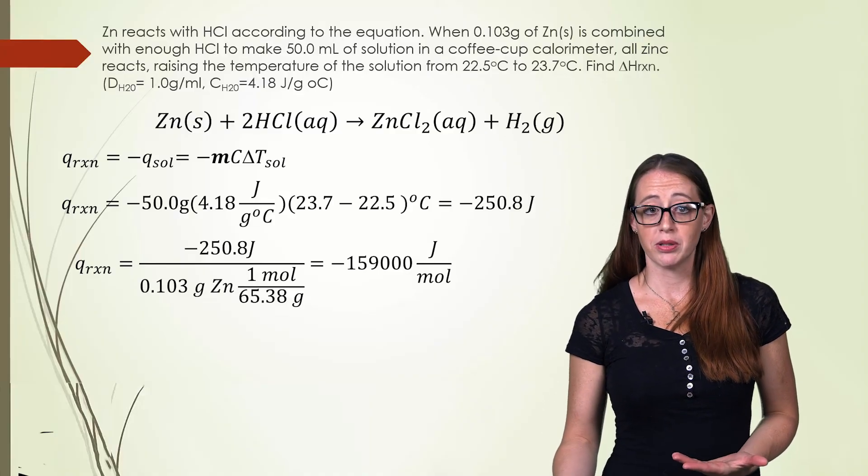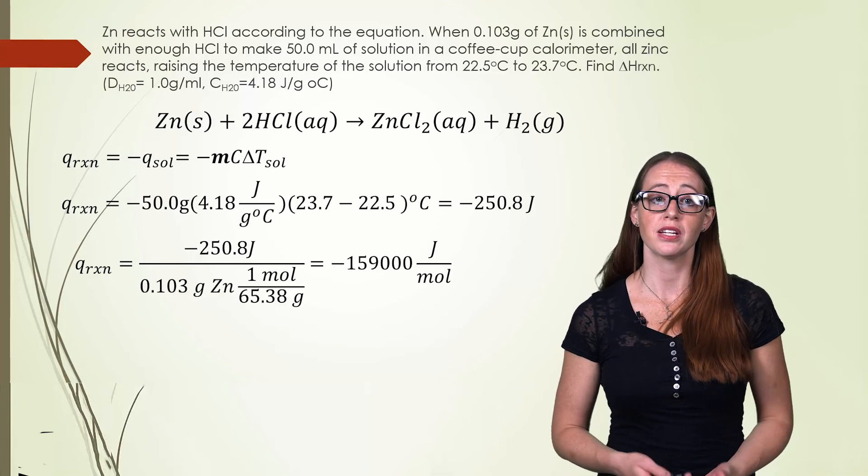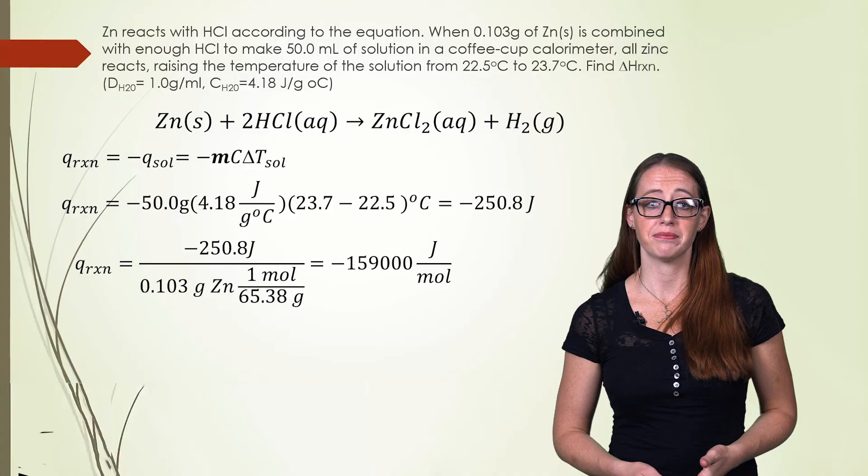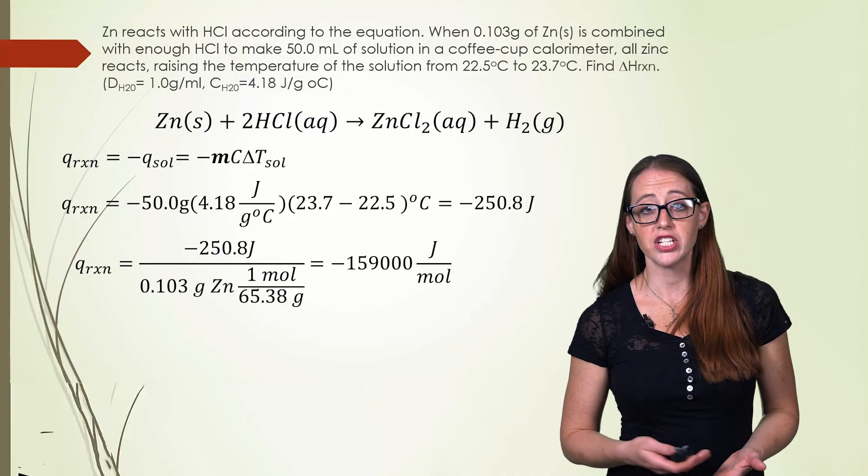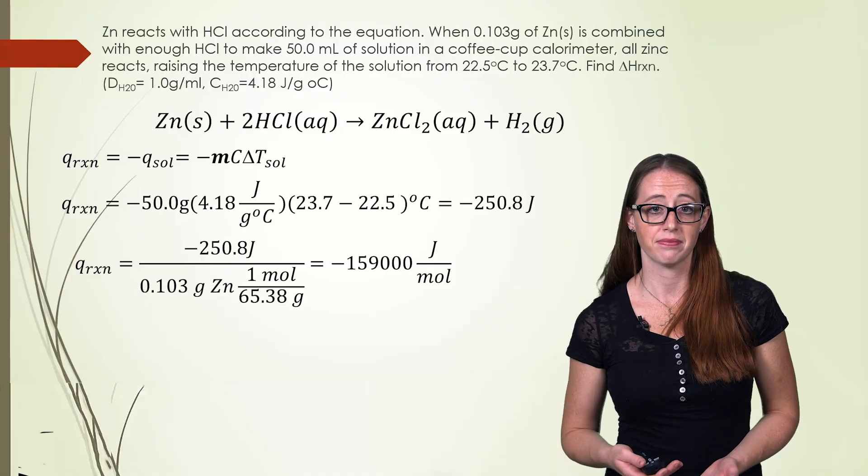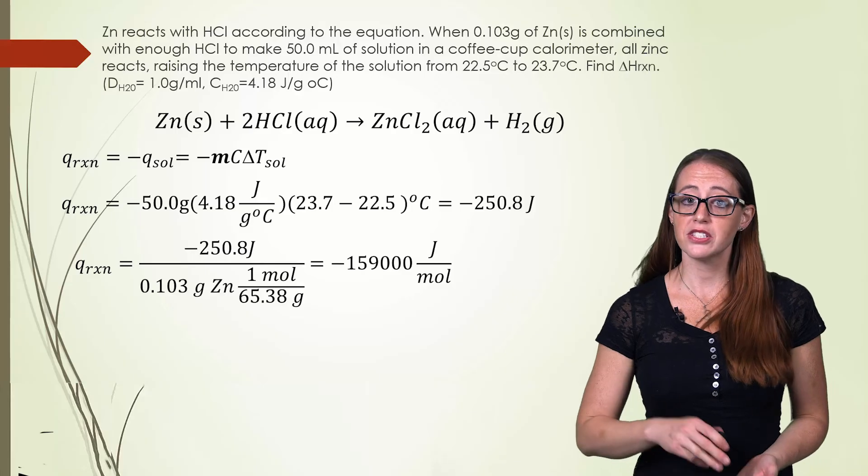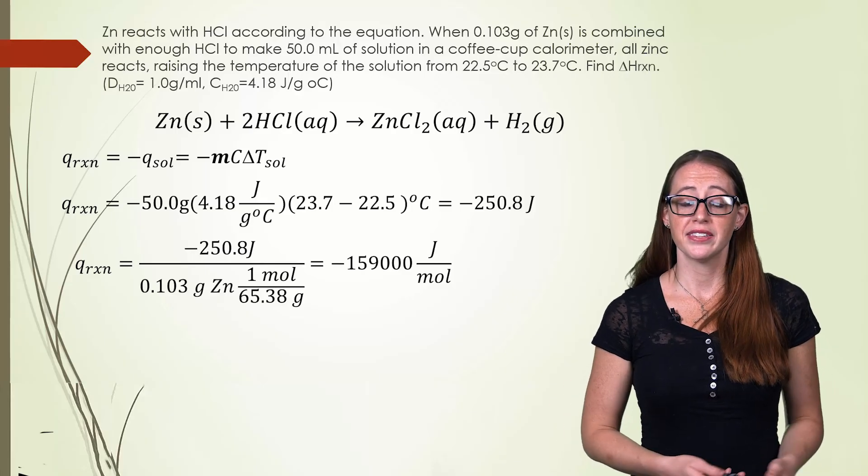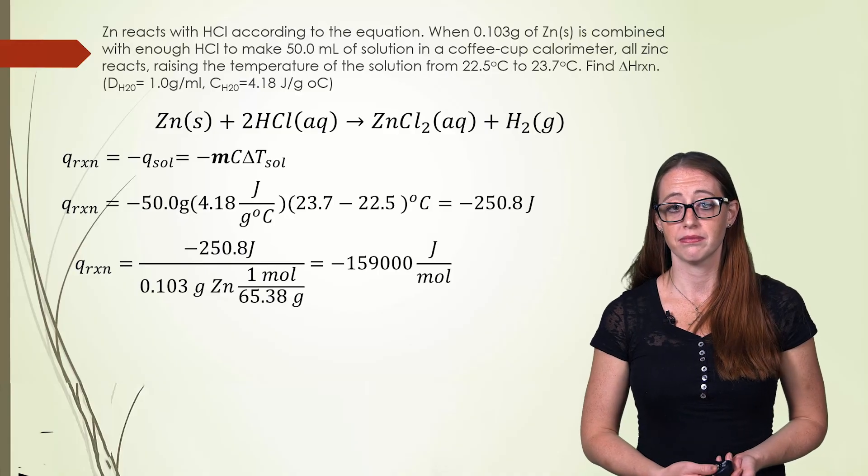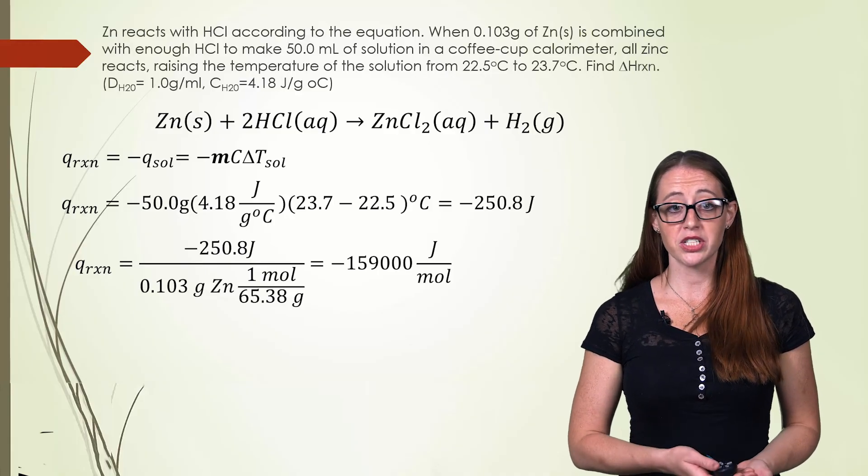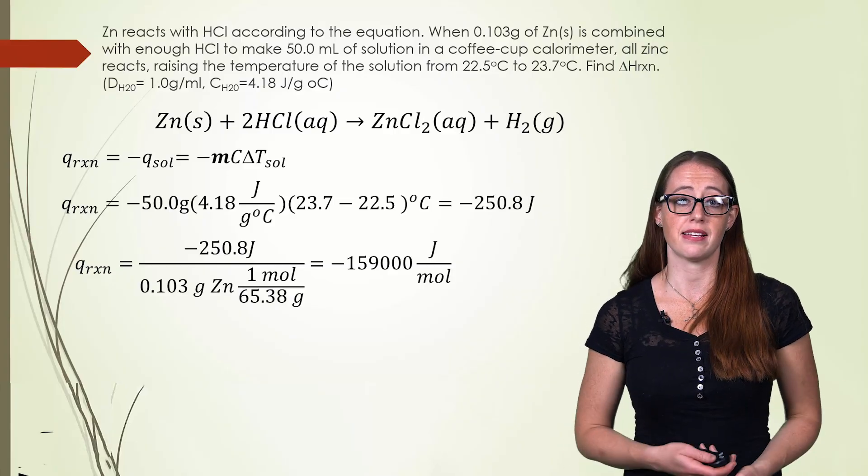This gives us our final value. Notice that it's in joules per mole. We would also often convert something like this number to kilojoules to make it a little nicer to look at. It's also worth noting that it is negative and checking to make sure that makes sense. We know that our water went up in temperature. Since our water went up in temperature, that means that our reaction was giving energy to the water. Therefore, our reaction was losing energy. And this is what we've shown here with the negative sign. So the sign makes sense.